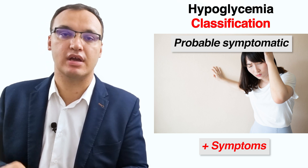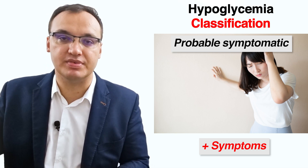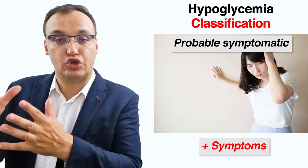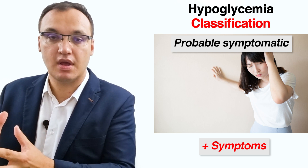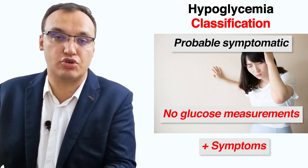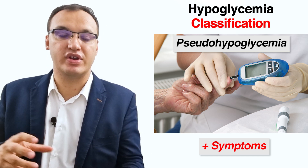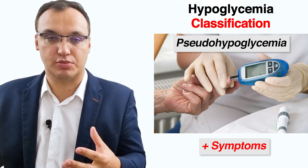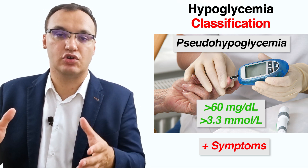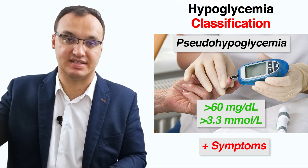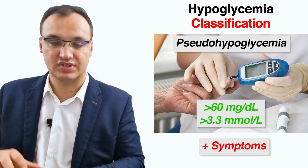Probable symptomatic hypoglycemia is presumed hypoglycemia during which typical symptoms are present but no blood glucose measurement was taken to confirm it. Pseudo-hypoglycemia is when a person experiences specific symptoms of hypoglycemia but with a measured plasma glucose concentration above 60 mg per deciliter or above 3.3 mmol per liter.